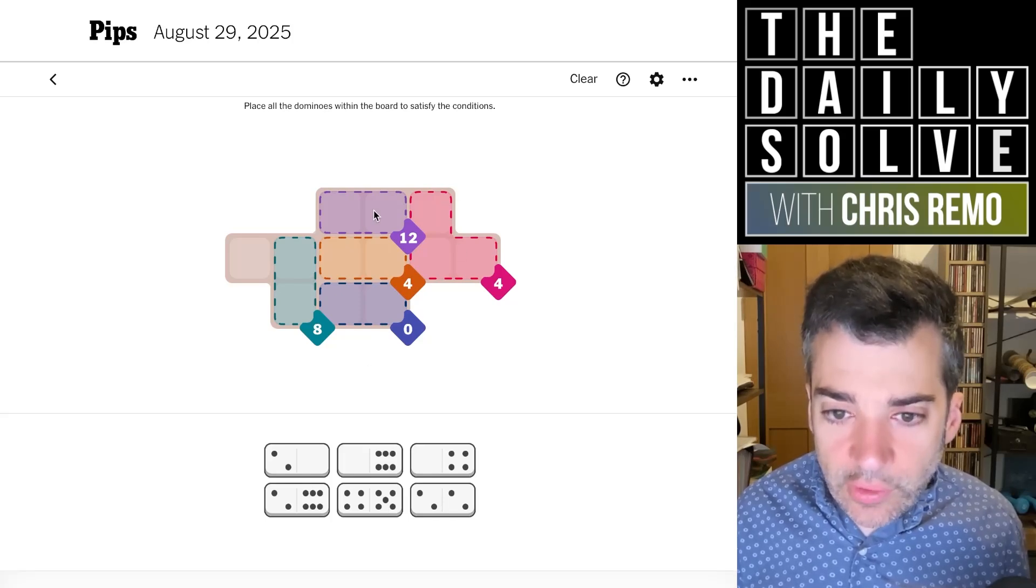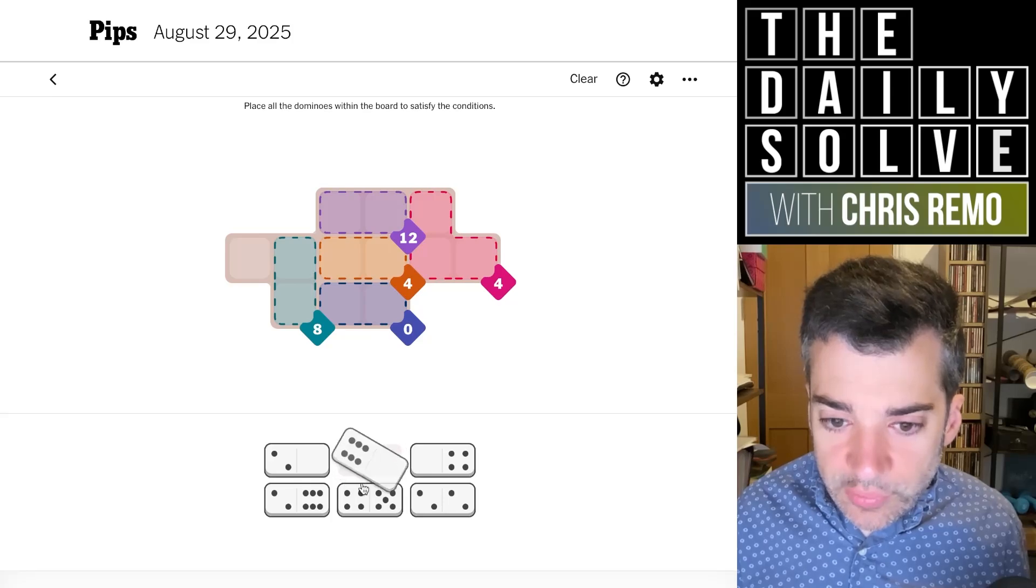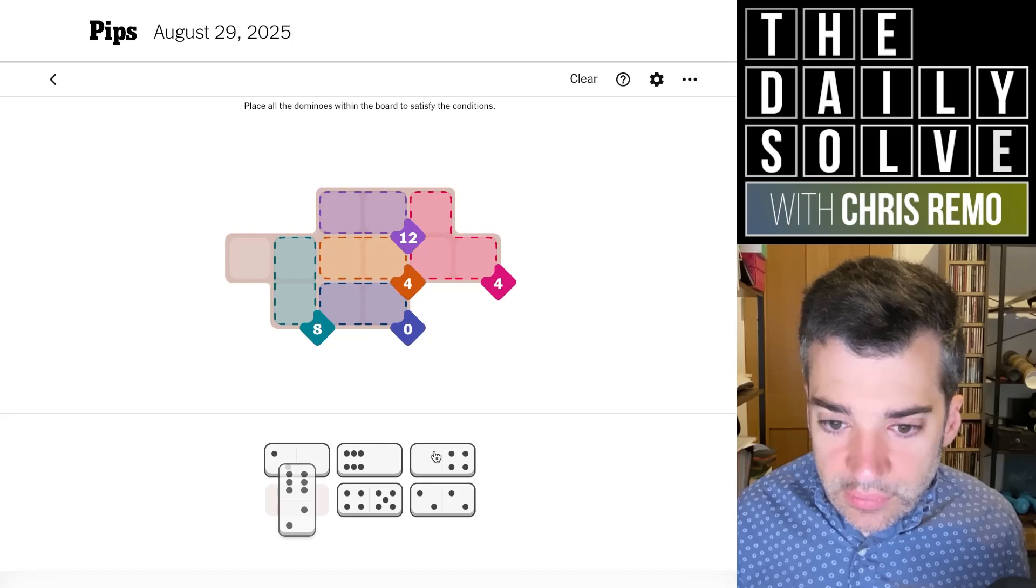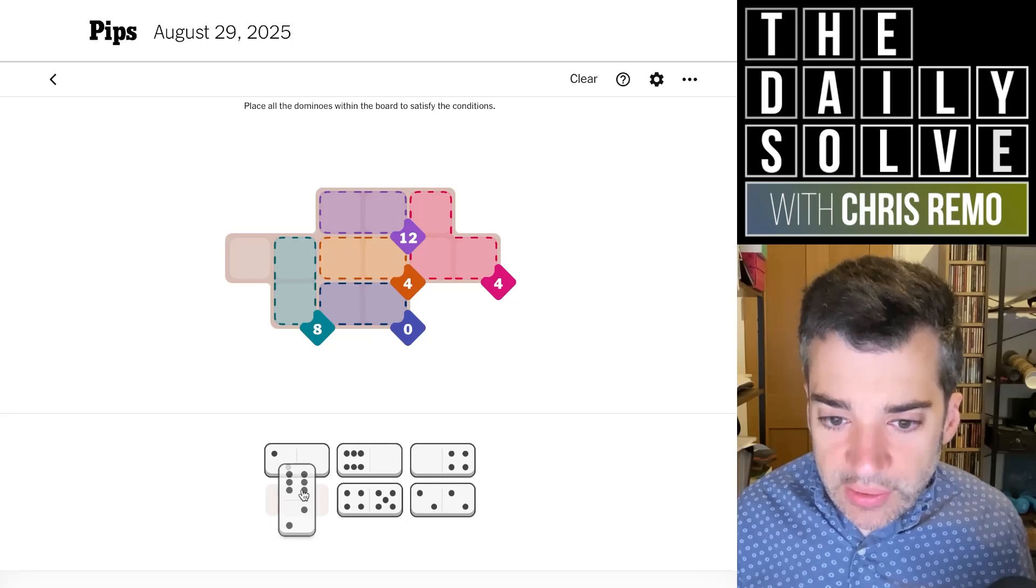The 12 will be made up of two sixes, which must both be placed vertically because that's the only way to do it. Oh no, they can't both be placed vertically. There's no way to do that either. So one of them will be vertical with a two.